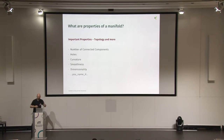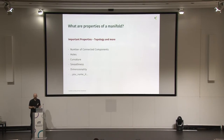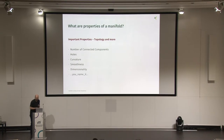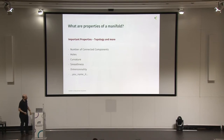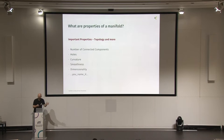These concepts — holes, curvature, number of connected components — this is what topology deals with. It's a very general theory in mathematics. It's actually dealing with open sets. Now we know some aspects or features that manifolds have: number of connected components, holes, curvature — something we all roughly understand. We don't need to define it more exactly here.